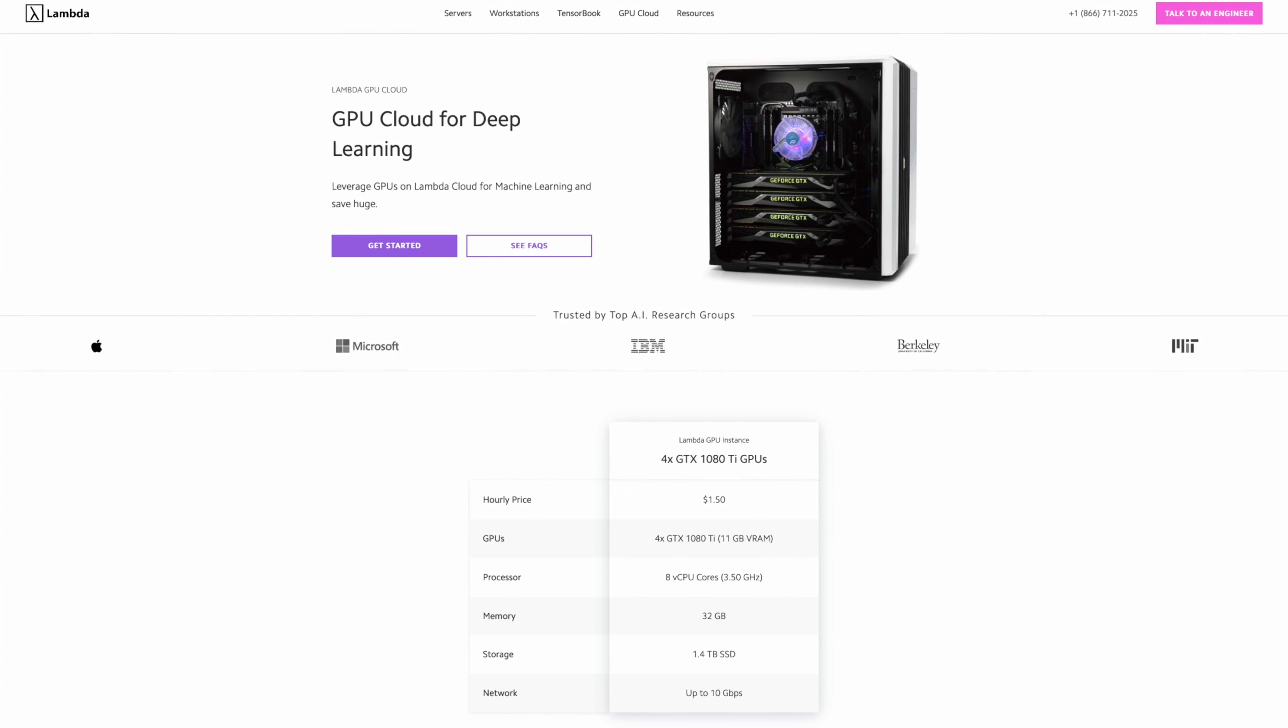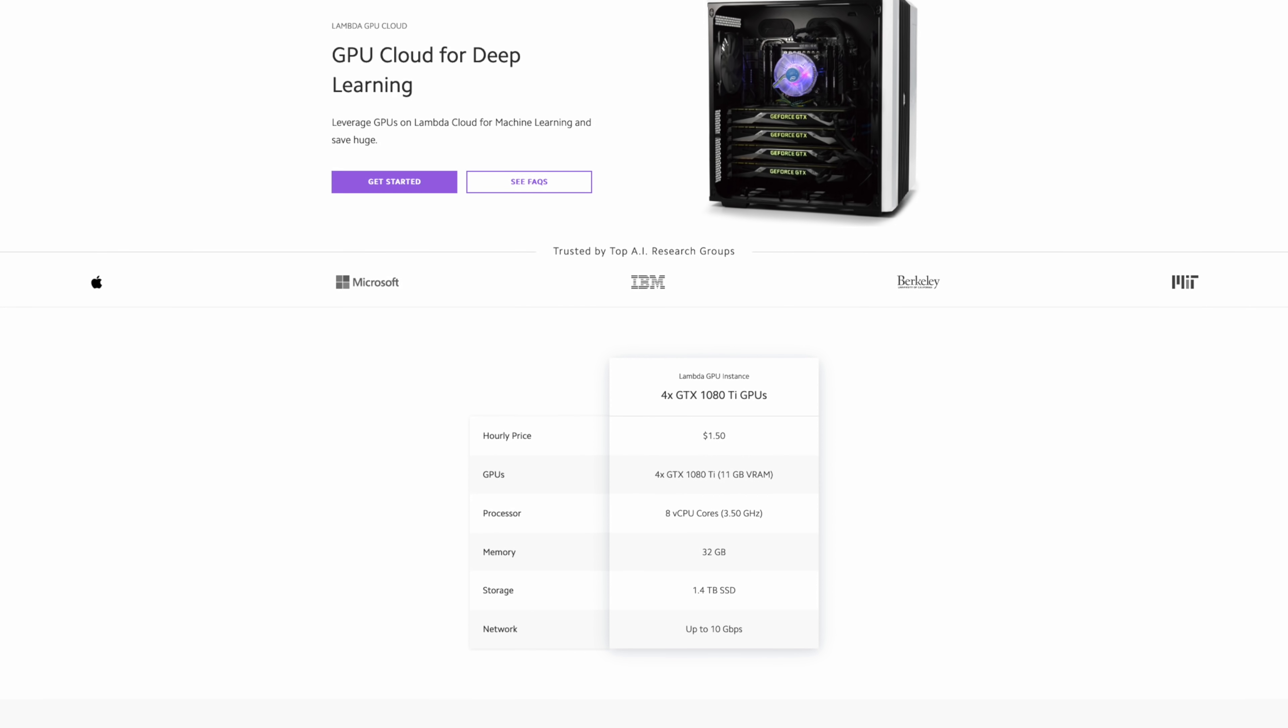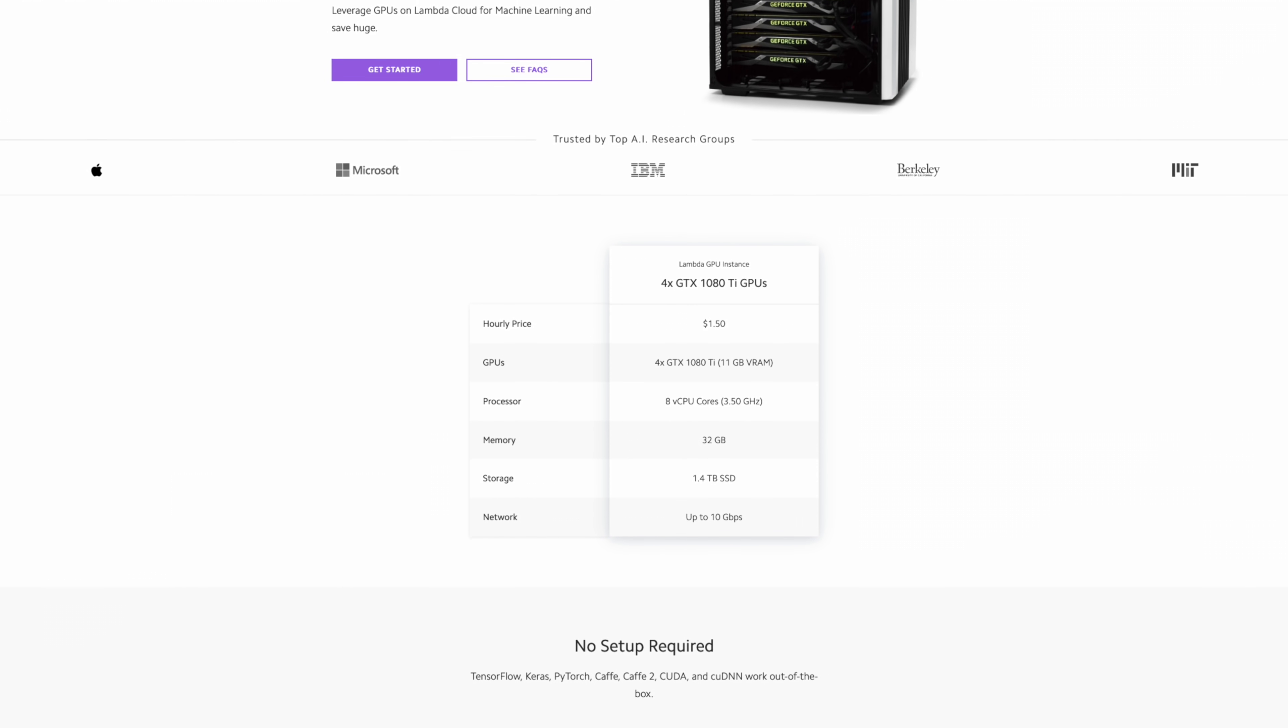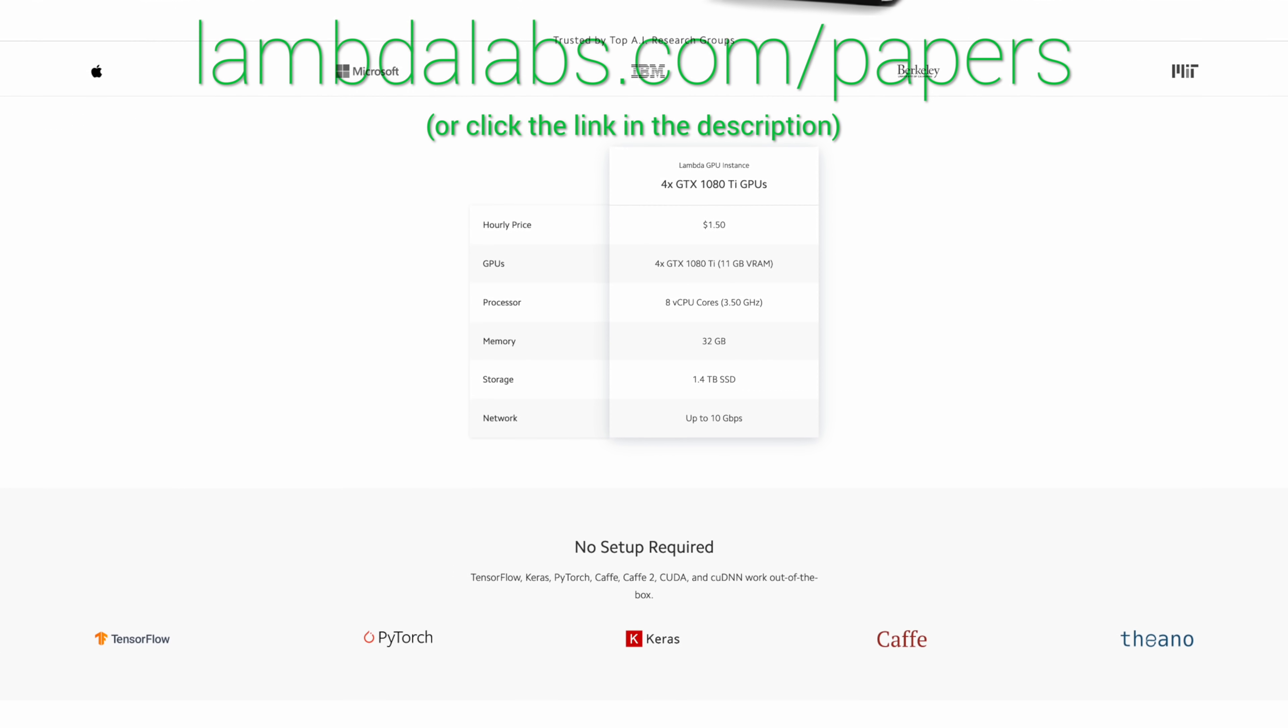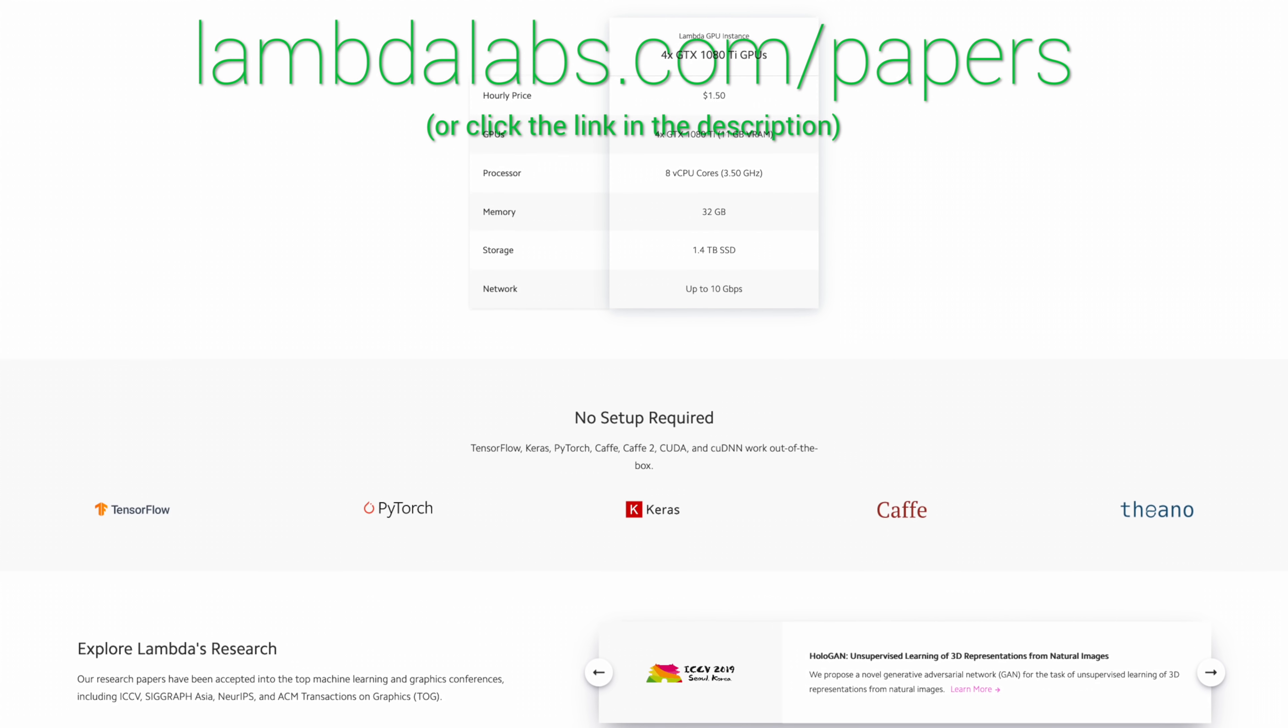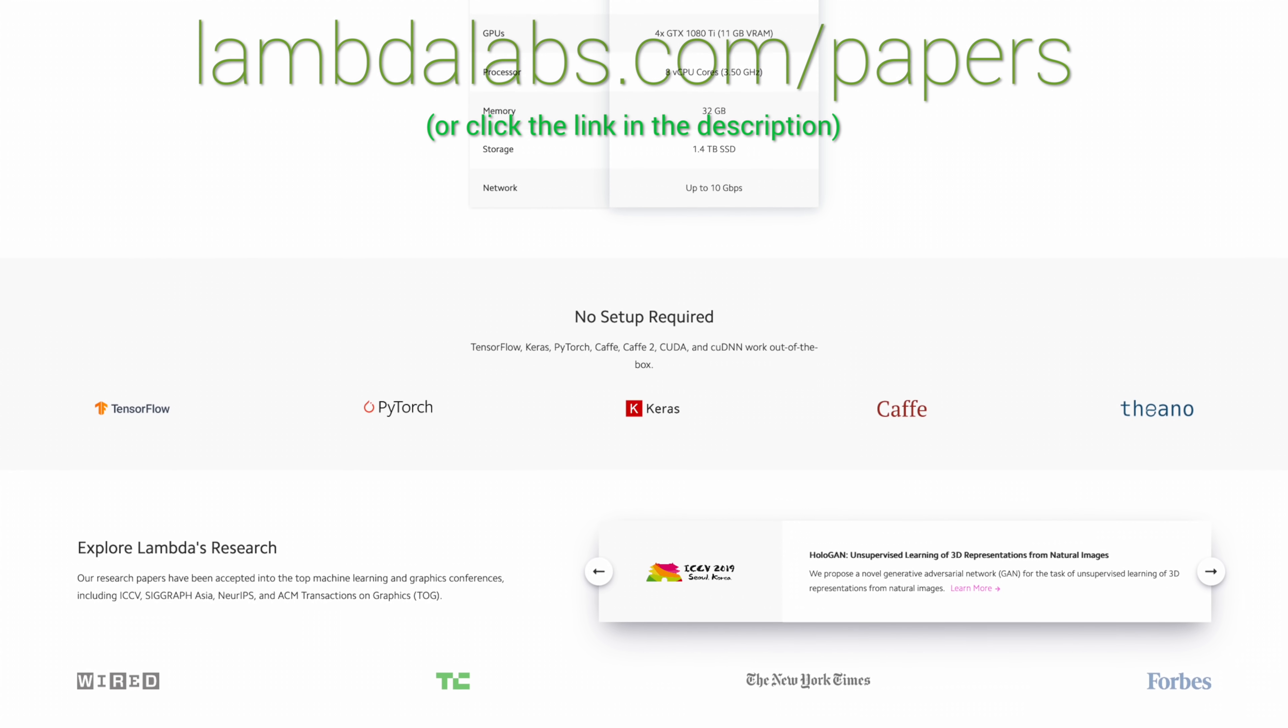This episode has been supported by Lambda. If you are a researcher or a startup looking for cheap GPU compute to run these algorithms, check out Lambda GPU Cloud. I've talked about Lambda's GPU workstations in other videos, and I'm happy to tell you that they are offering GPU cloud services as well. The Lambda GPU Cloud can train ImageNet to 93% accuracy for less than $19. Lambda's web-based IDE lets you easily access your instance right in your browser. And finally, hold on to your papers because the Lambda GPU Cloud costs less than half of AWS and Azure. Make sure to go to lambdalabs.com/papers and sign up for one of their amazing GPU instances today.